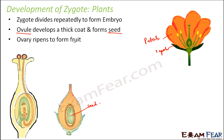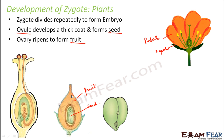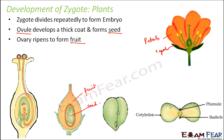So to summarize: the ovary becomes the fruit, the ovule becomes the seed, and the zygote becomes the embryo. The embryo is enclosed inside the seed. If you look inside a seed, you will see cotyledons or seed leaves, a very small plumule which will later become the shoot, and a small radicle which will later grow to form the root. This structure enclosed inside the seed is the embryo.